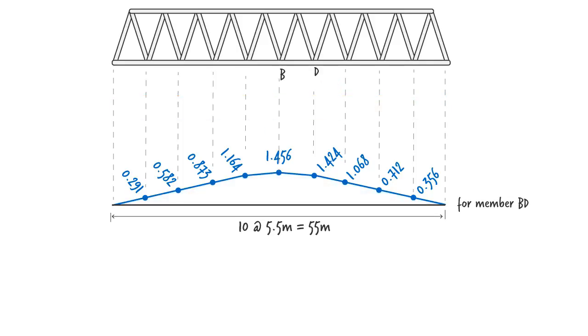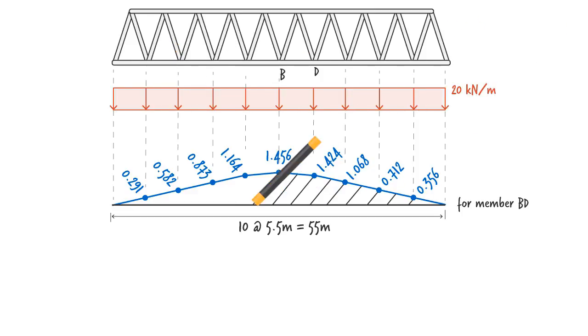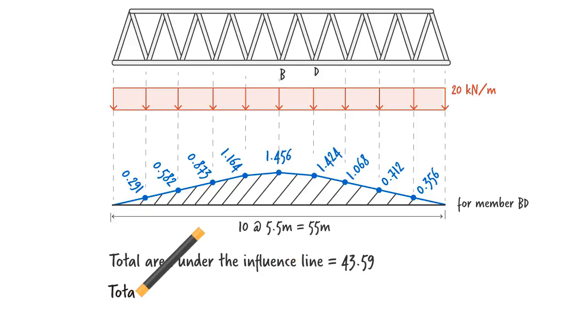So, for a uniformly distributed load of 20 kN per meter, the total tensile force in the member can be calculated this way. Note that this is the maximum tensile force that could develop in the member, which takes place when the train covers the entire span of the bridge.